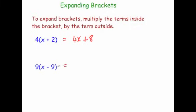Let's have a look at another one. 9 bracket x minus 9 — well 9 times x is 9x. And then 9 times minus 9, well 9 times minus 9 is minus 81.